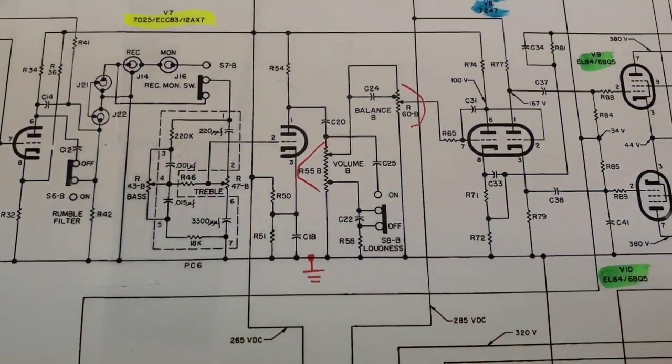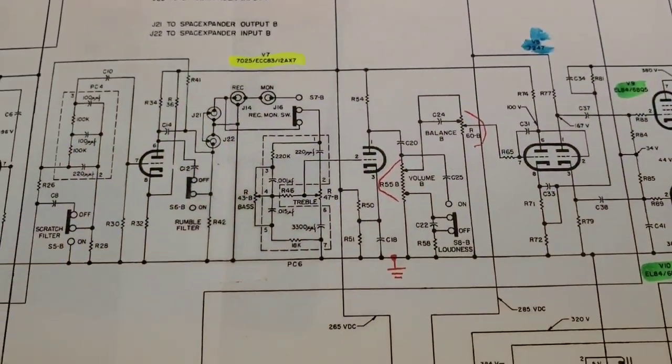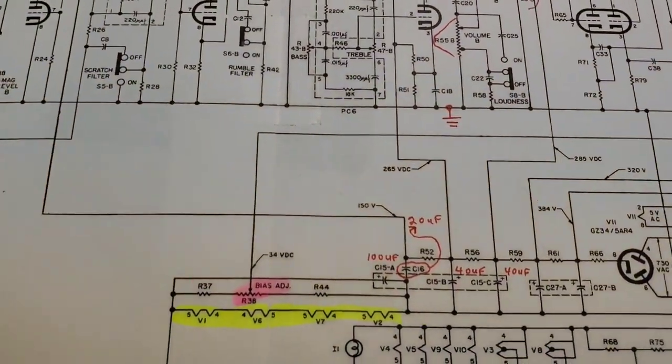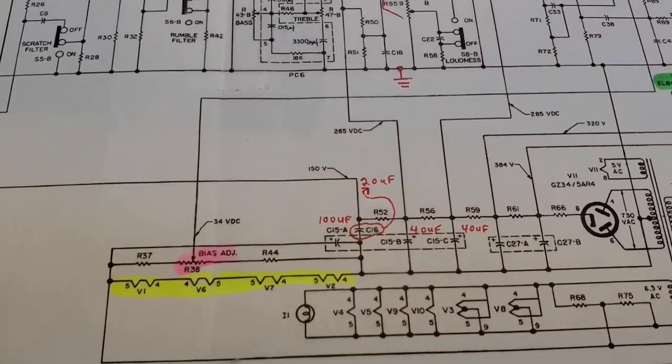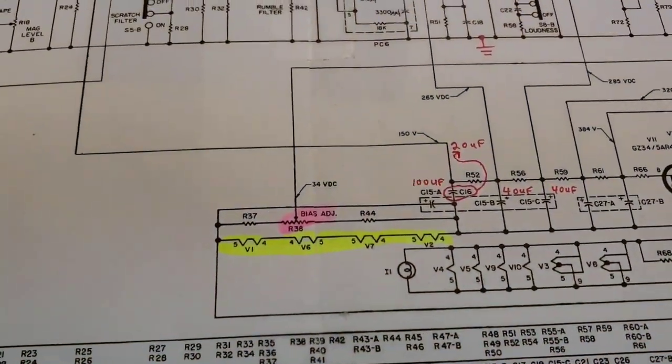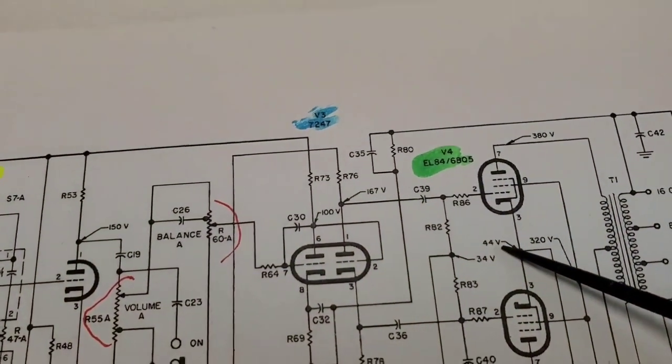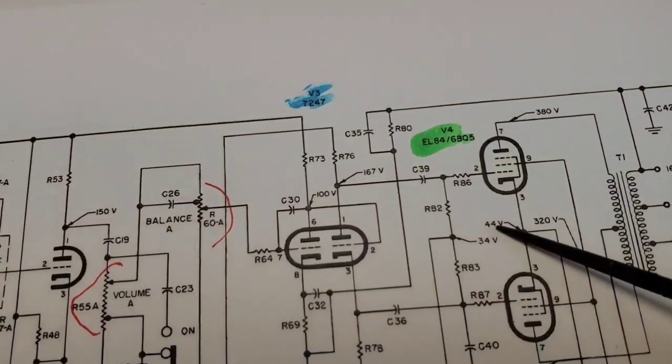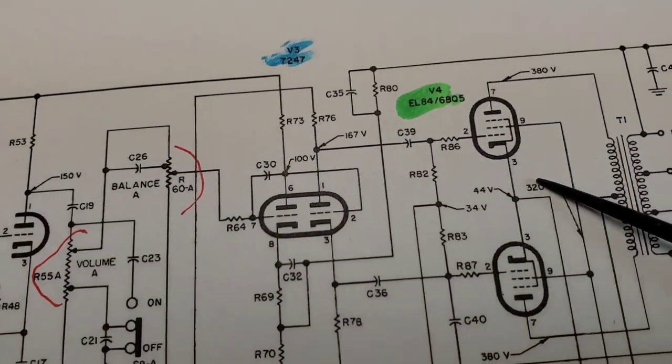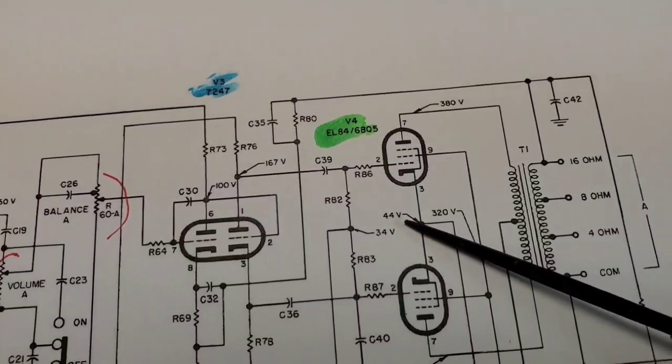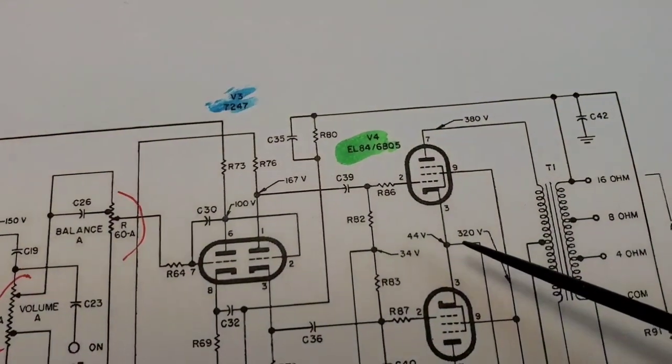I'd like to do a receiver one next because that involves the fixed bias with the output tubes. This one, you don't have to worry. You just adjust the pot. I forget the manual tells you to adjust this to like 44 volts. 40 volts is a little better, but they run a little cooler. You could do 44 volts, but at 40 volts, it runs a little cooler and you really don't introduce any distortion. It's good and get a little more life out of the tubes.